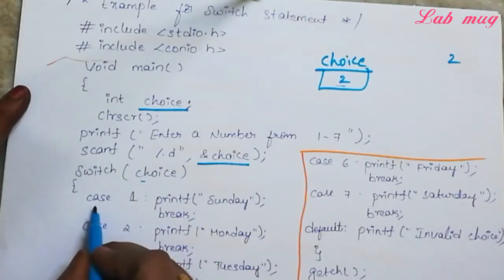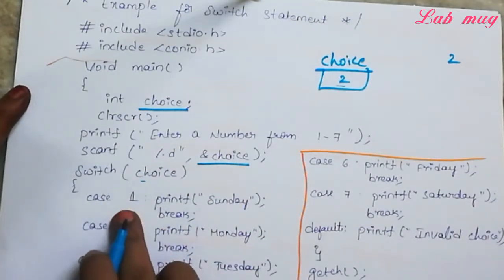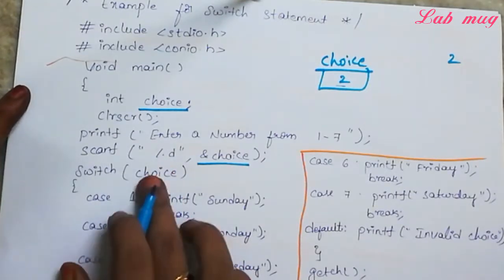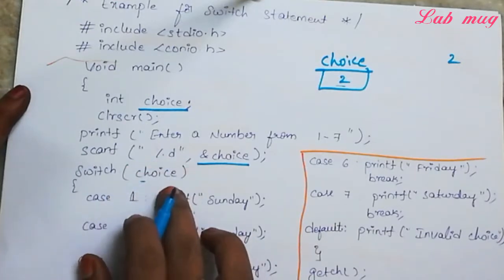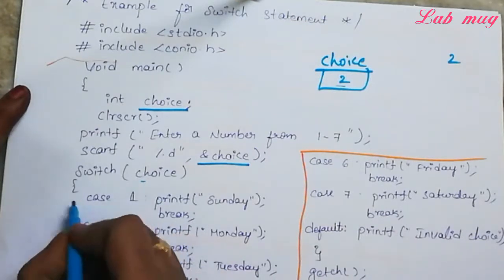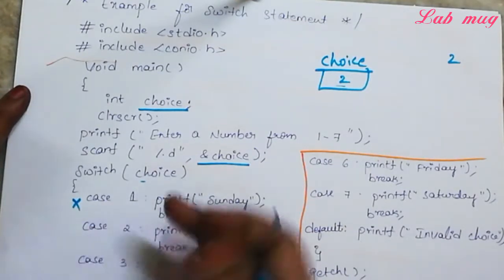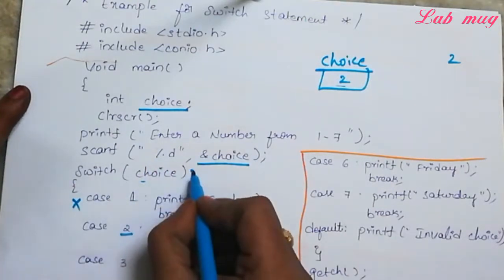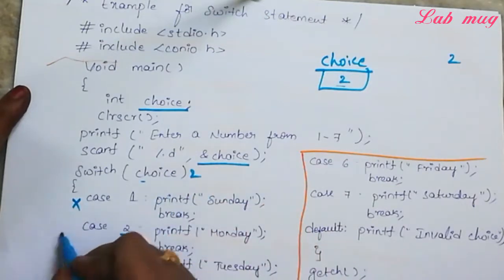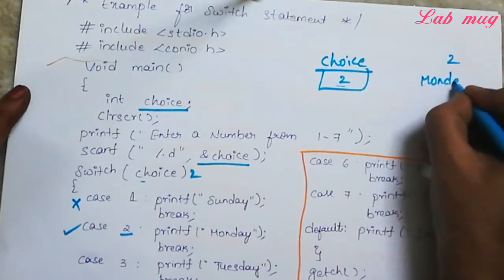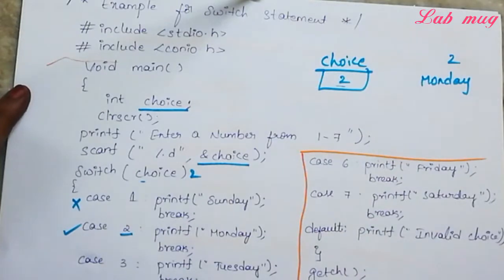Inside the switch, case 1 has constant value 1. The user entered 2, so 1 and 2 do not match — case 1 is skipped. Moving to case 2: constant is 2, and 2 matches 2. So case 2 executes and prints 'Monday'. After executing, the break statement is reached.